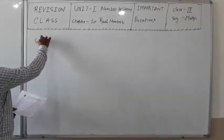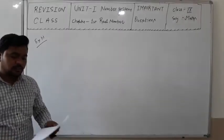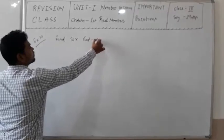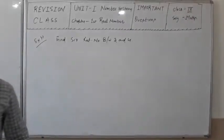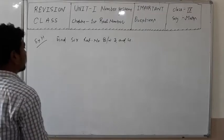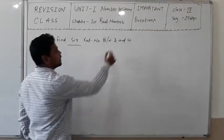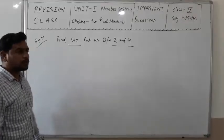Let us take exercise 1.1. An important question from that exercise: find 6 rational numbers between 3 and 4. We have to find 6 rational numbers between 3 and 4. Note that 3 and 4 are two integers and can also be considered rational numbers.